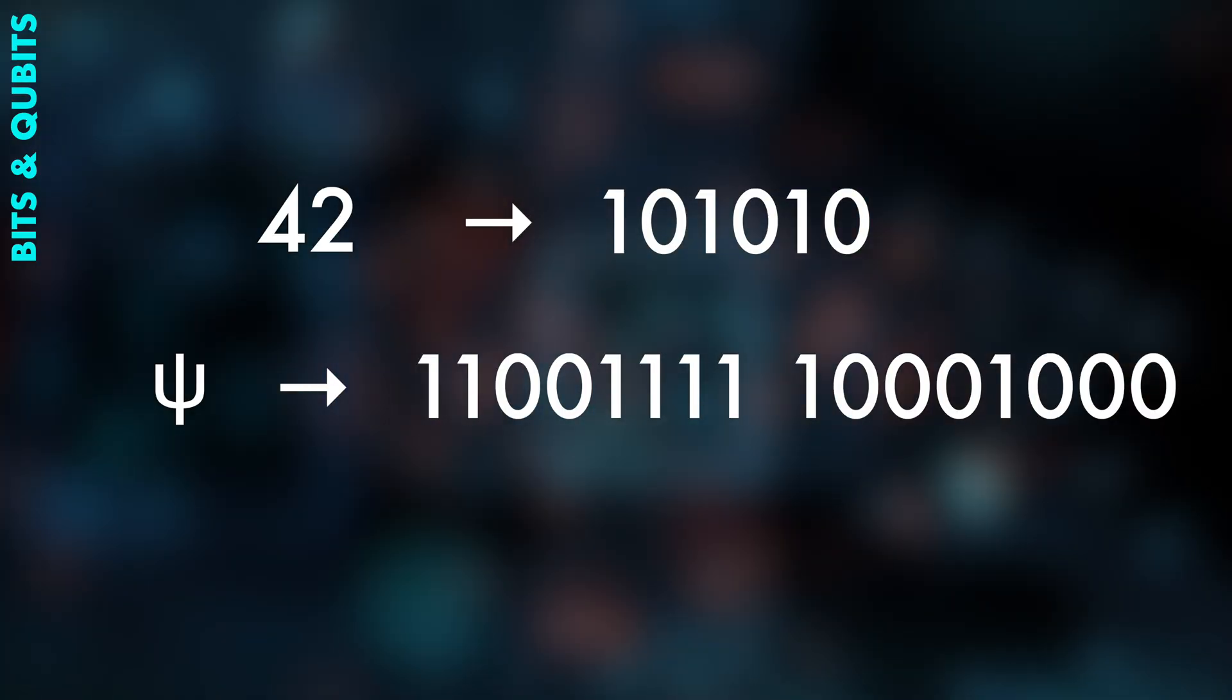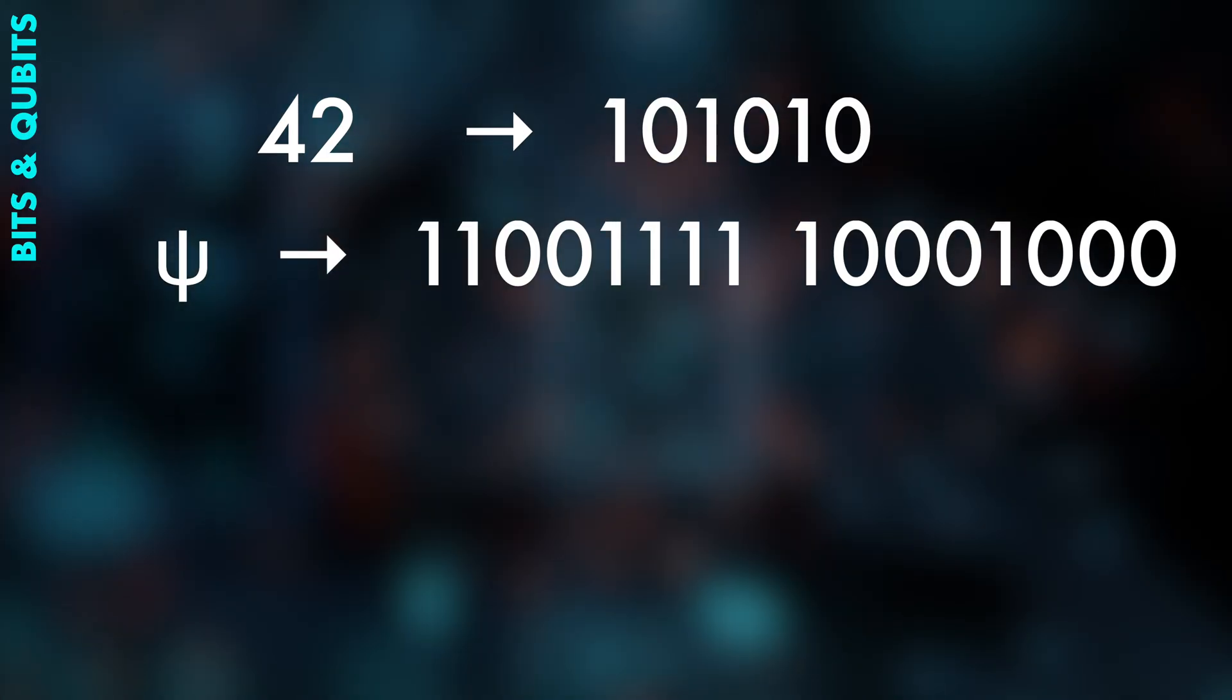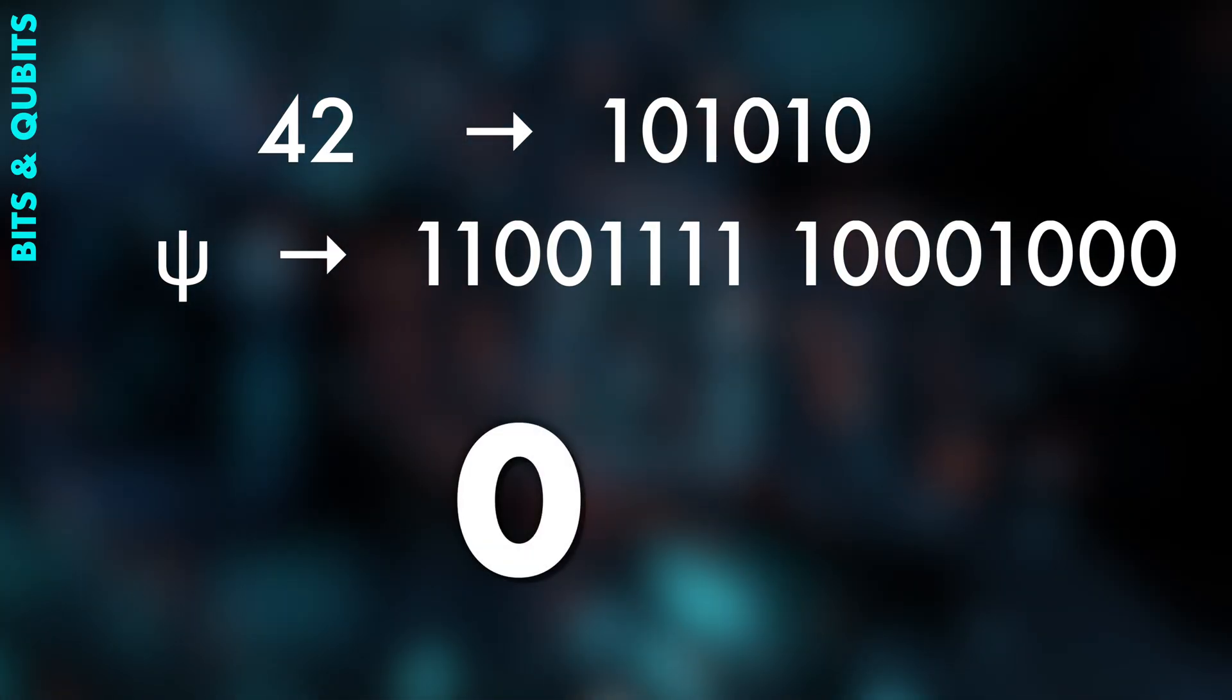Okay, so gates operate on bits, and quantum gates operate on qubits. Bits are easier to understand. A bit can simply be zero or one. You can encode numbers and letters and everything in bits, but at the end of the day, it's just something that can be zero or one.